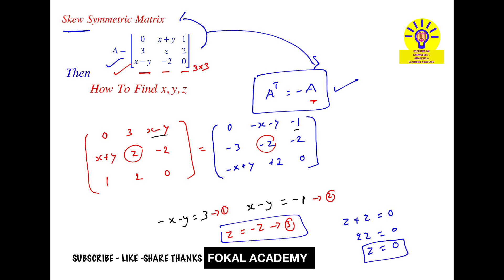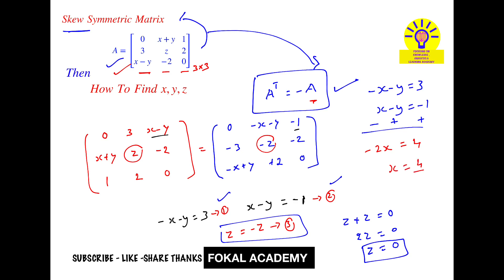Now we need to find x and y. Subtract equation 2 from equation 1: minus x minus y equal to 3, minus (x minus y equal to minus 1). Applying minus gives minus 2x equal to 4, so x equal to 4 divided by minus 2, therefore x equal to minus 2.